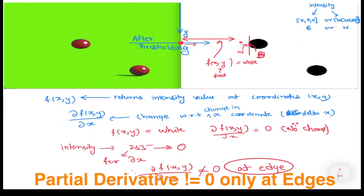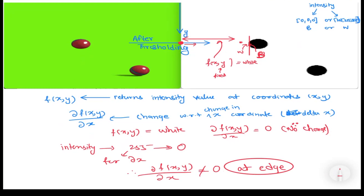The key point is that at edges the derivative is not equal to zero, and where there are no edges the derivative is equal to zero. For different values of y, when we compute the partial derivative with respect to x — moving left to right — we encounter edge conditions and obtain the edge points.